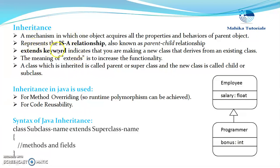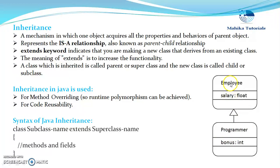Inheritance represents the 'is-a' relationship, which is often known as the parent-child relationship. For example, if we have an Employee class and then we create a new class Programmer from it, then we can say that Programmer is an Employee.